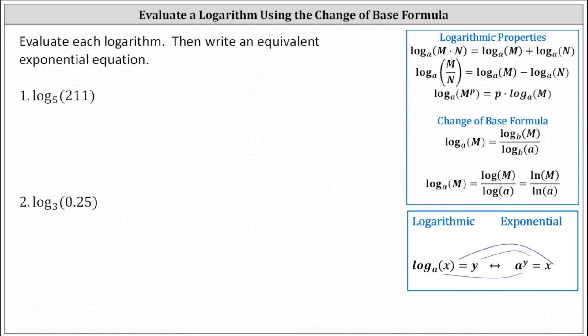For number one we have log base five of 211. Because 211 cannot be written as five to a power, we'll have to use a calculator to evaluate this logarithm, and we'll be using the change of base formula. The change of base formula is log base a of m equals log base b of m divided by log base b of a. Notice m is the input for the log, a is the base of the log, and b can be any base.